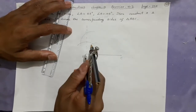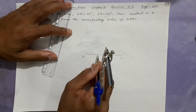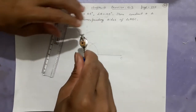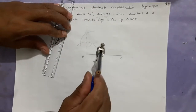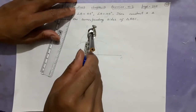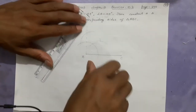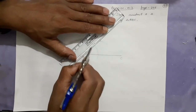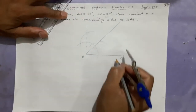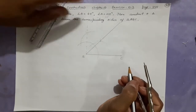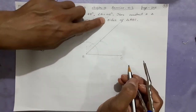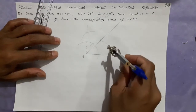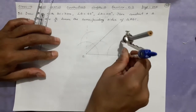Now I'll make the bisector of this 90-degree angle. Take one arc on the 90-degree angle — the construction is already there. Cut it here and here, then join — this gives your 45-degree angle at B. Somewhere along this ray is point A, but we will not bother finding it now. Instead, we'll make angle C equal to 30 degrees, which will automatically meet the ray at A. Now I'll construct 60 degrees on the other side.